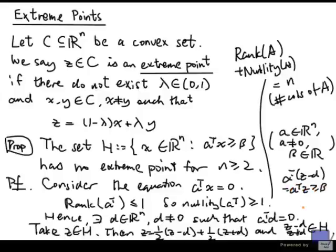And that, of course, is at least beta. And the same thing is true if you put a plus: A transpose z plus d is again A transpose z. That's at least beta as well.